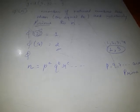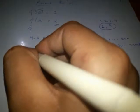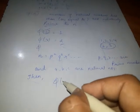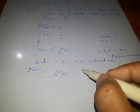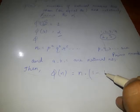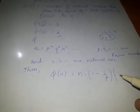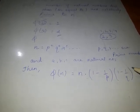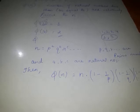Here p, q, r and so on are prime numbers, and a, b, c are natural numbers. Then phi n equals n times 1 minus 1 upon p, 1 minus 1 upon q, 1 minus 1 upon r, and so on.